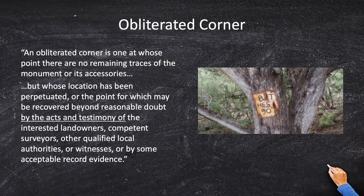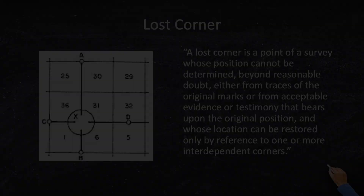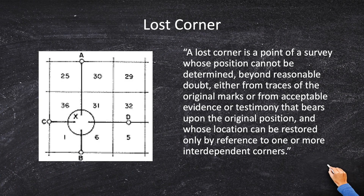You've transformed it from obliterated to existent. Third, the lost corner — you have to absolutely bend over backwards to try to make this corner existent or obliterated, because when you start putting in a new monument or creating a new corner from other evidence, it's a crapshoot. The BLM does not want surveyors calling a corner lost unless they are absolutely certain the corner is lost.